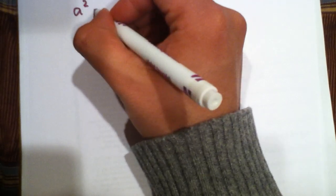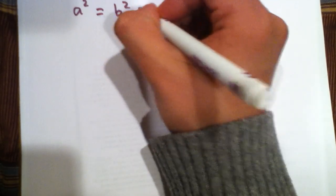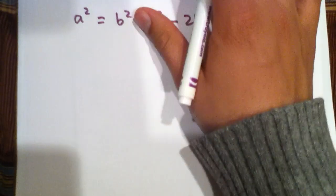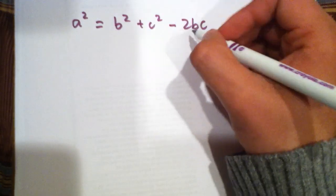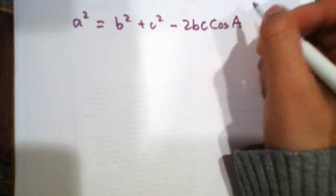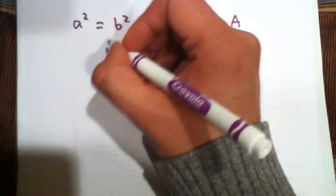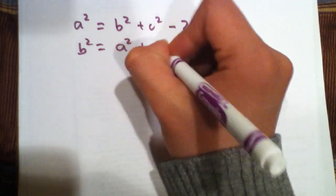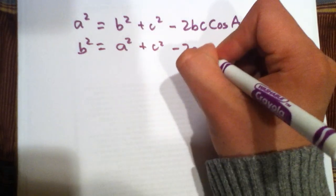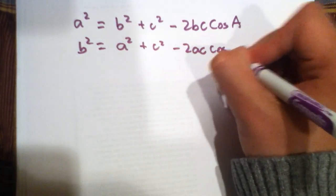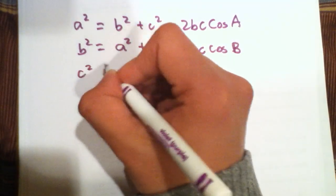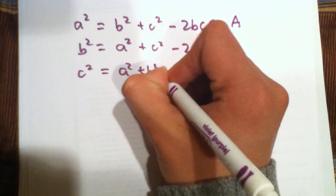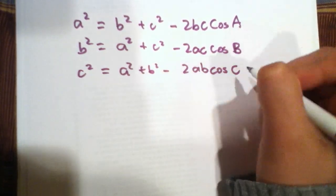A squared is equal to B squared plus C squared minus two BC cosine of A. And then, the next one would be B squared is equal to A squared plus C squared minus two AC cosine of B. The last one is C squared is equal to A squared plus B squared minus two AB cosine of C.